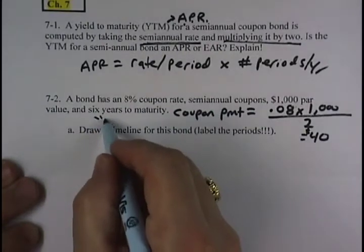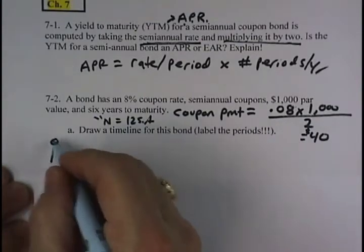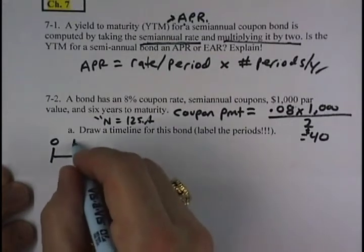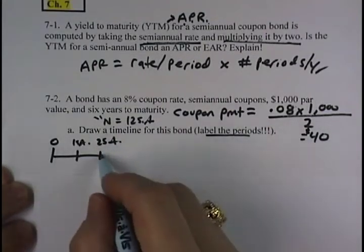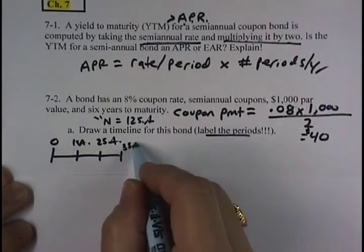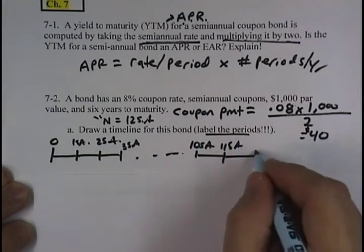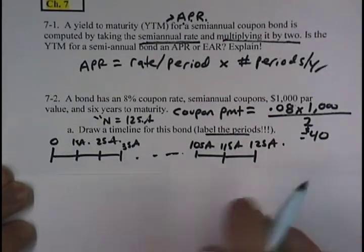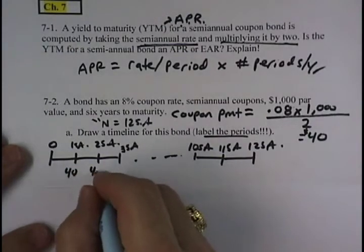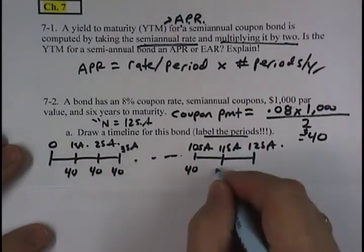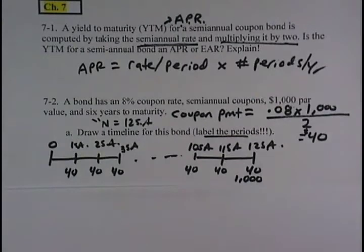With six years, semi-annual, N would be 12 semi-annual periods. So for our six-year bond, I'm going to have 12 periods. Each one of these will be semi-annual periods. So when it says to label the periods, I'm labeling these as semi-annual. And that 12th semi-annual period occurs six years from now. Each semi-annual period, the bond makes a $40 coupon payment. It does that 12 times over the six years. And then at maturity, the bond pays out its $1,000 par value.